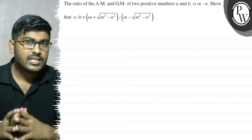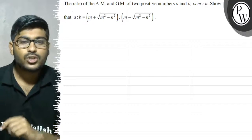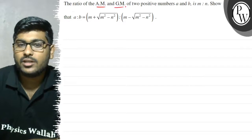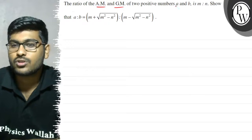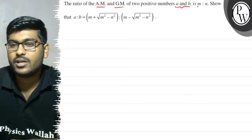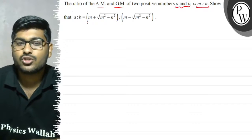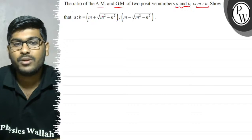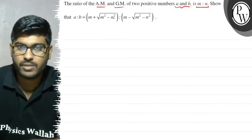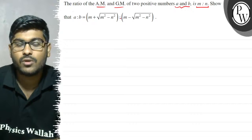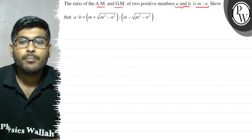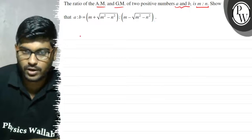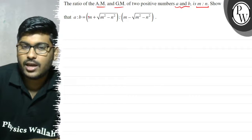Hello, let's see this question. The question says that the ratio of AM and GM of two positive numbers a and b is m to n, so that a is to b is equal to m plus root m squared minus n squared, is to m minus root m squared minus n squared.